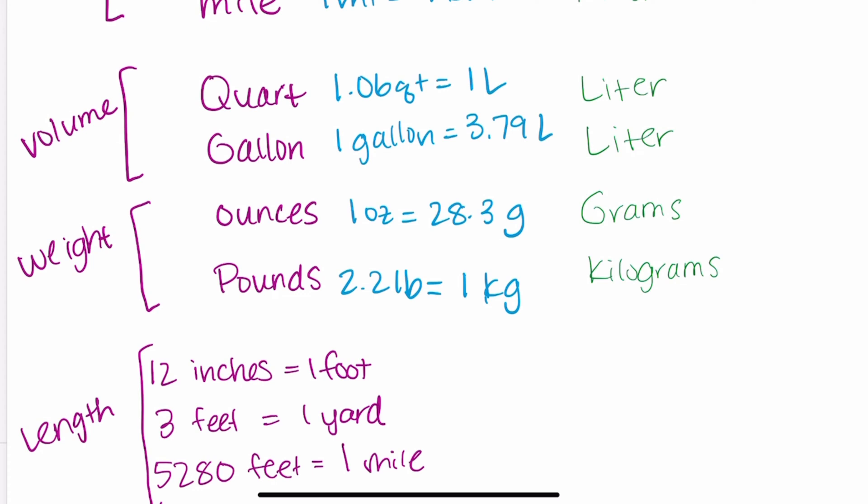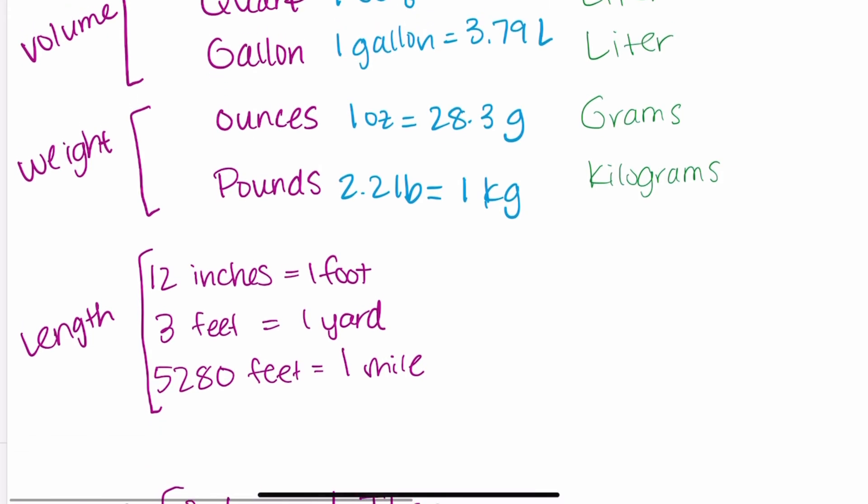Then moving on to measurements of weight we have ounces in the standard system and grams in the metric system. We have pounds in the standard system and kilograms in the metric system. So one ounce is equal to 28.3 grams and 2.2 pounds is equal to one kilogram. These are some of the most important conversions for you to memorize between the standard system and the metric system.